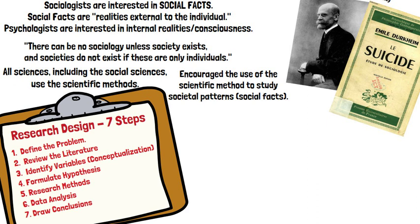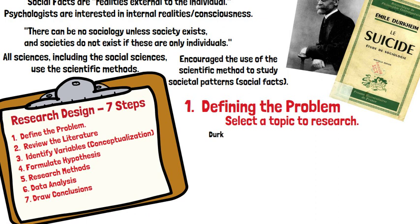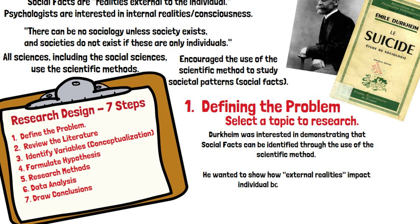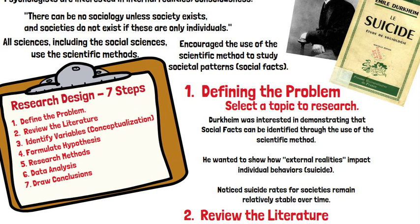Let's see how Durkheim used the scientific method in his study of suicide. Durkheim began by defining the problem and selecting a topic to research. He was interested in demonstrating, especially to other sociologists, that social facts can be identified through the use of the scientific method. He wanted to show how external realities impact individual behaviors. Durkheim noticed that suicide rates for societies remain relatively stable over time, and his research asked why, and what external factors contribute to this stability.